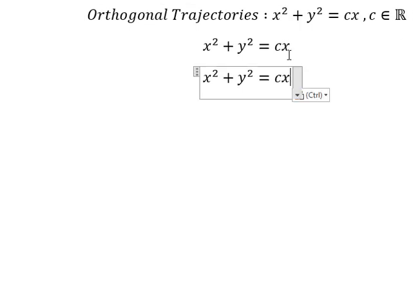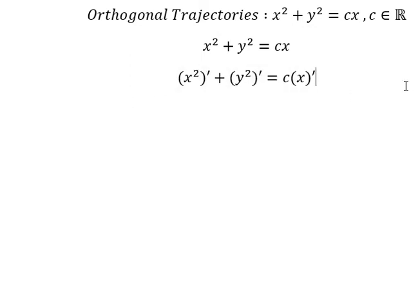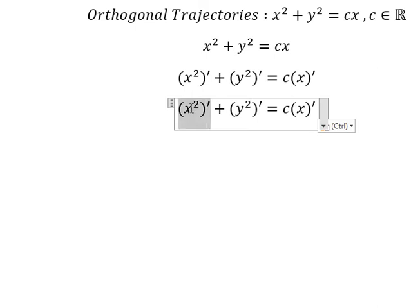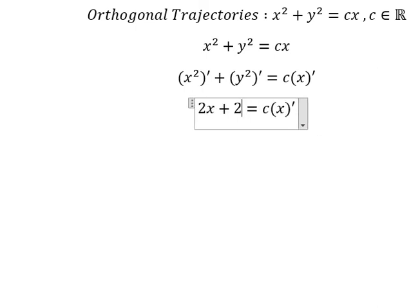First, we need to do first derivative for both sides. So this one we have 2x. This one we have 2y and first derivative of y. This one we have number 1.